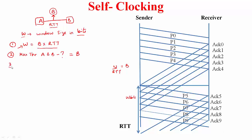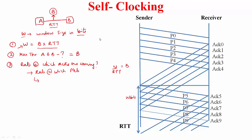What is the rate at which ACKs are coming? This equals the rate at which you are sending packets, because you generate one ACK for every packet received. The rate at which packets are sent is dictated by the link capacity. So the spacing between ACKs is dictated by the transmission time of the packets being sent.